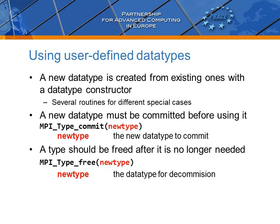So how do we use them? We first need to define the type using special routines for data type construction. Then we need to commit it before we can refer to it. This is accomplished through the MPI_Type_commit routine, which has a single input and output argument: the handle for the data type from the constructor routines. When we no longer require the type, it is good practice to free the allocation through MPI_Type_free. The possible challenges lie in the constructor routines — selecting the correct one and describing the data structure with it. Many of them are available, but we will demonstrate the process with only one of them.